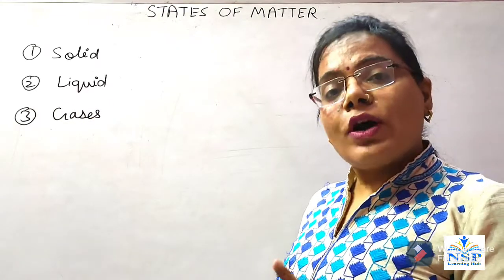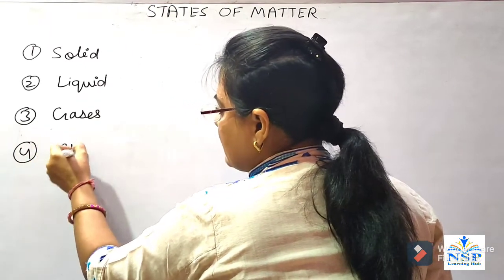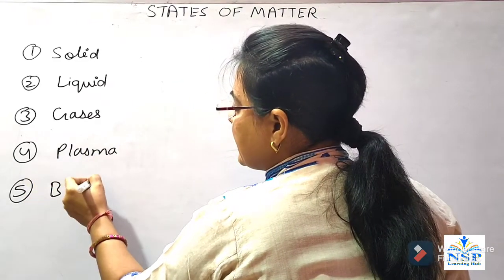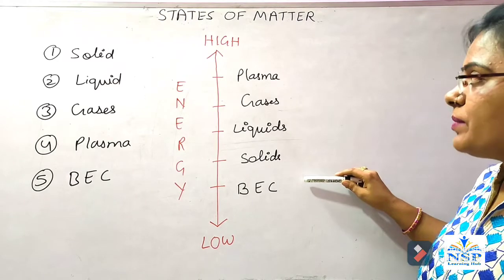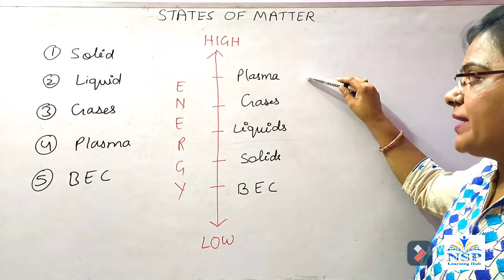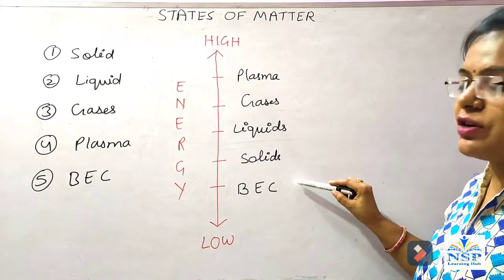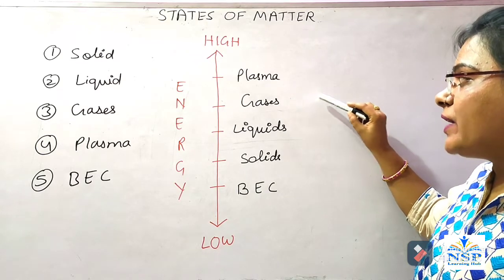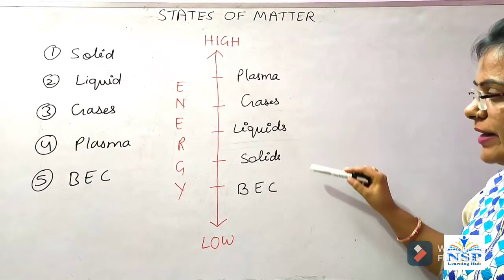Two more states of matter are also discovered: the fourth one is plasma, and the fifth one is Bose-Einstein condensate. Plasma has the highest energy because of charged particles present in it. Bose-Einstein condensate has the least energy because of its rigid nature. Solid, liquid and gas are in the middle, because of the interparticle force — which determines the different energy levels of these states.